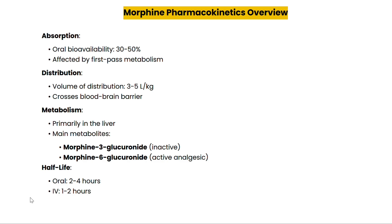This means a significant portion of the drug is metabolized before it enters systemic circulation. Regarding distribution, once in the bloodstream morphine is widely distributed throughout the body. It can cross the blood-brain barrier, which is essential for its pain-relieving effect. The volume of distribution is approximately 3 to 5 liters per kg, indicating that morphine is well distributed into body tissues.